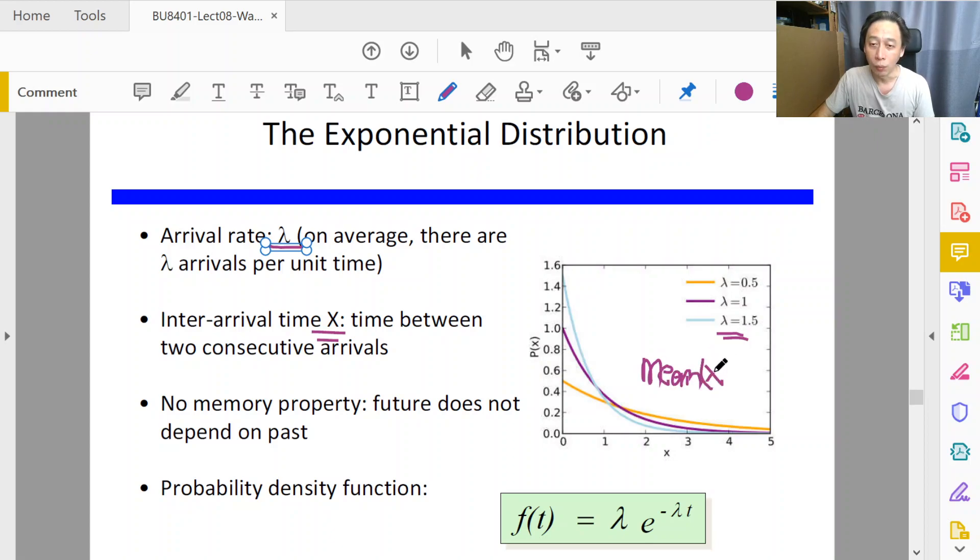So the mean of X will be one over lambda, and that will be the average inter-arrival time. For example, if it's one per minute—the per minute is not written here but it can be per hour or per second—but we can attach to it so long as we are consistent in our interpretation.